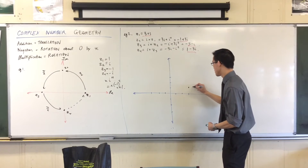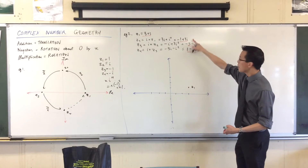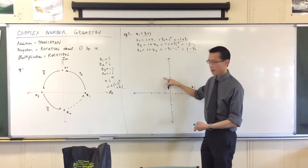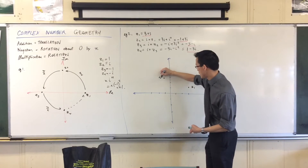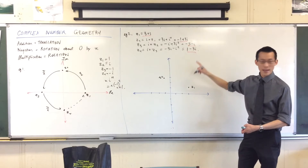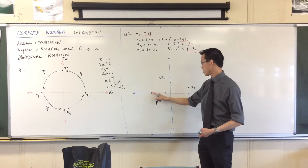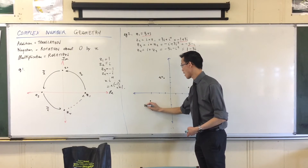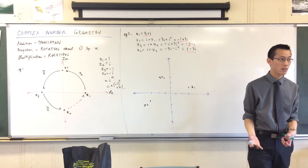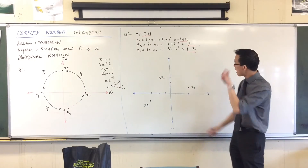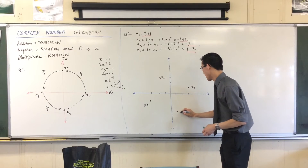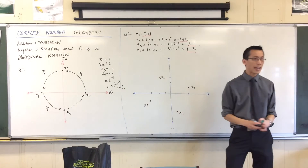So: 3 plus i is there, Z1. Minus 1 plus 3i is here, Z2. Minus 3 minus i — where's that? Minus 3 minus i — and that shouldn't surprise us, because Z3 is the negation of Z1, is it not? So you can see I've gone all the way around. And then Z4 is 1 minus 3i.